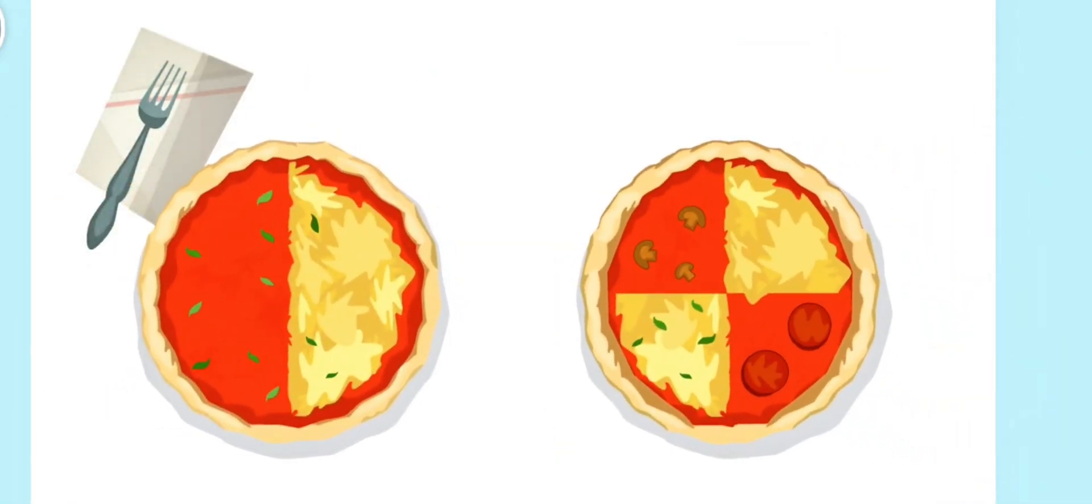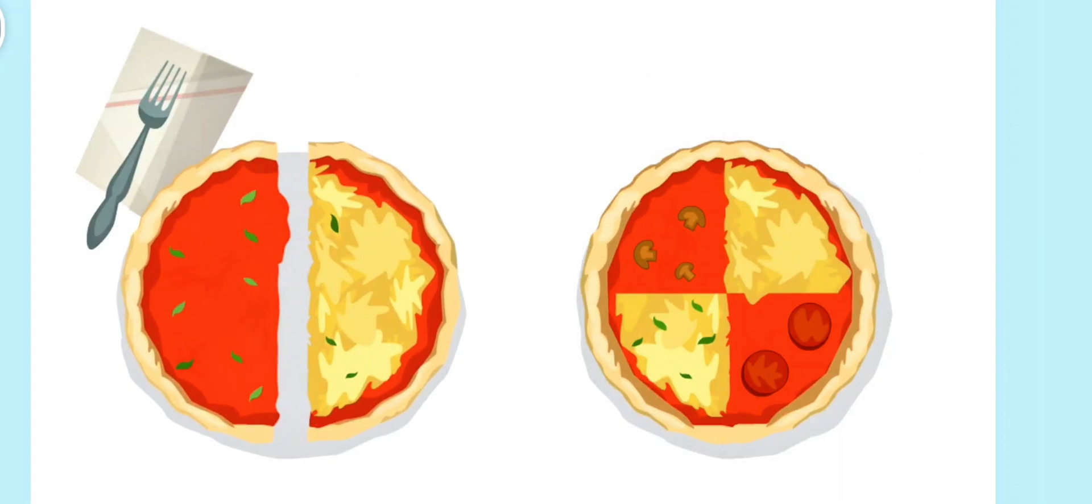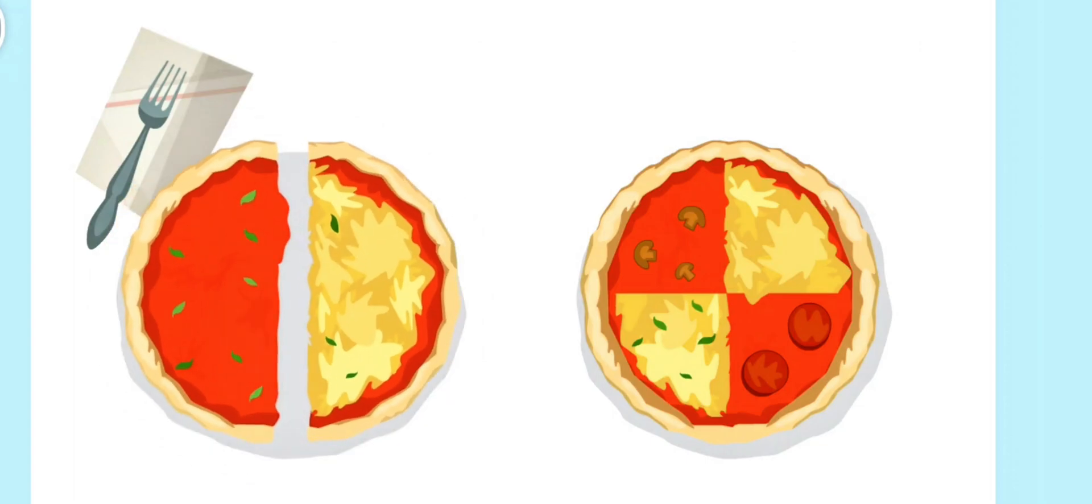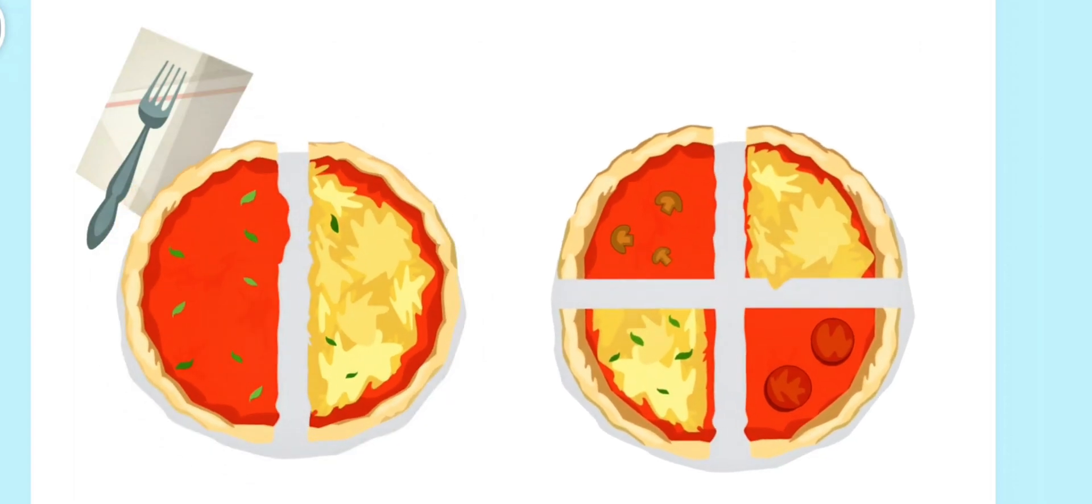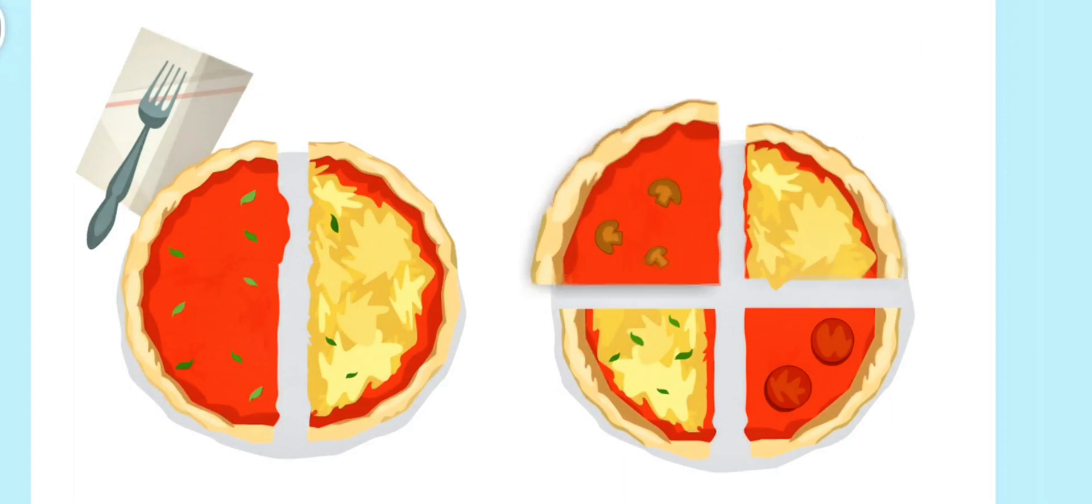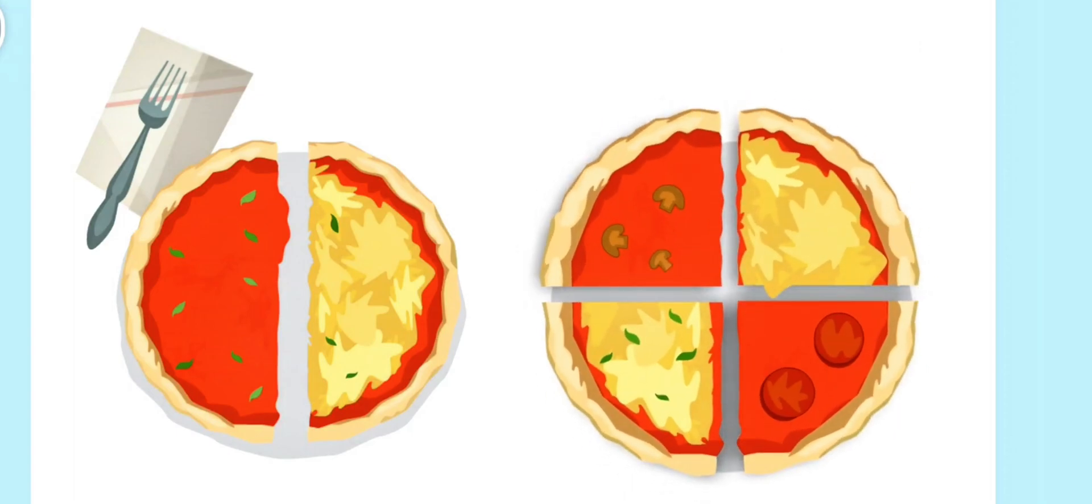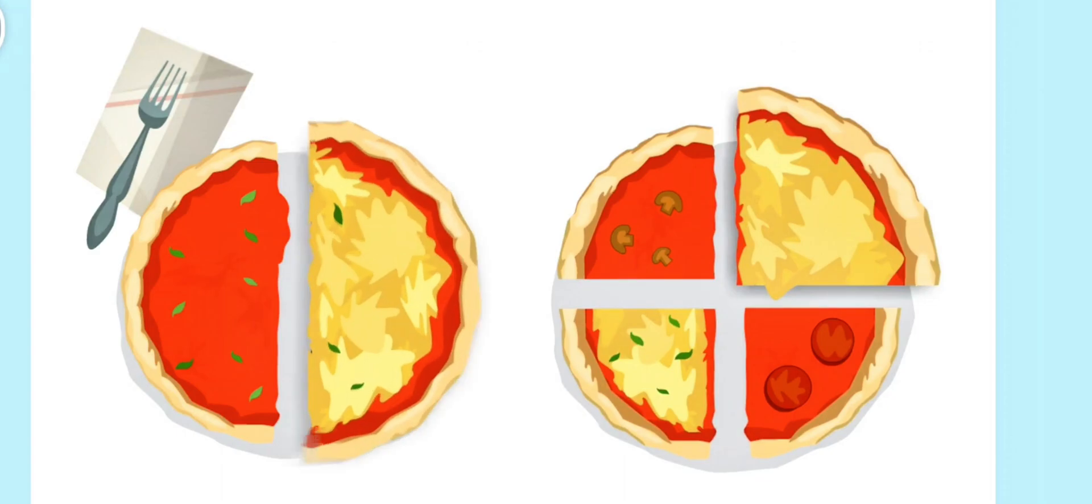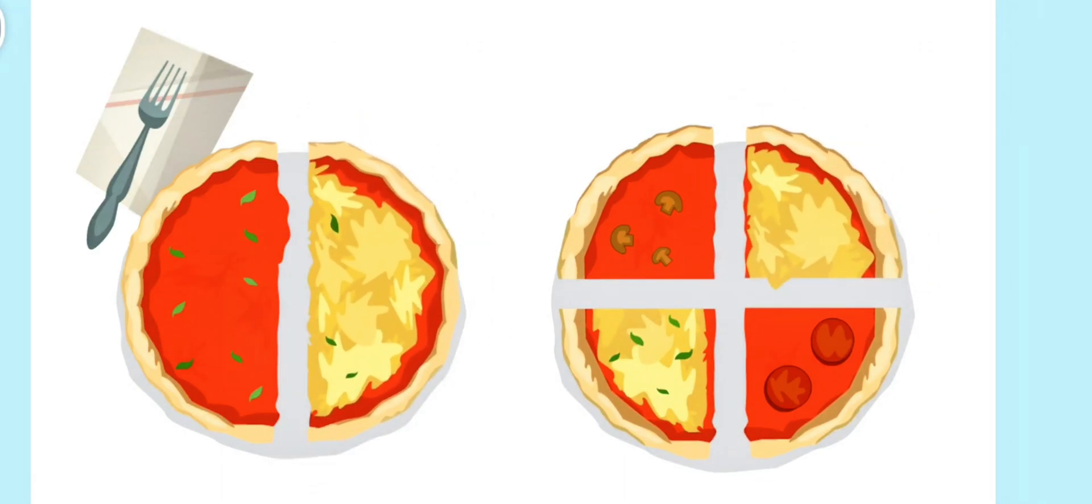It's a pizza party! If we cut a pizza into two equal pieces, it is cut in half. Each of these two pieces are half of the pizza. If we cut a pizza into four equal pieces, it is cut into fourths. Each of these four pieces are a quarter of a pizza. A quarter is smaller than a half. But both taste just as good!